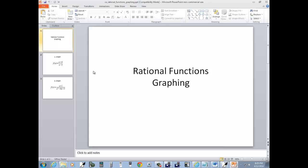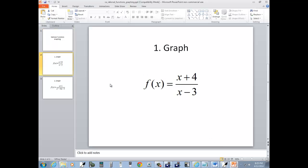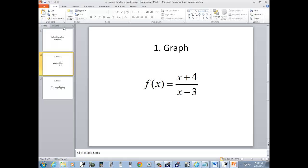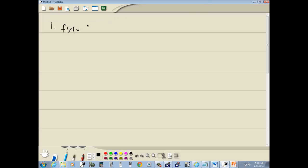Let's take a look at our first problem here. We want to graph this rational function. We've got f(x) is equal to (x+4) over (x-3).